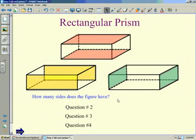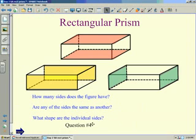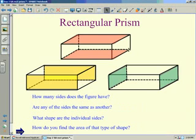Question 1, how many sides does this figure have? Question 2, are any of these sides the same as another? Question 3, what shape are the individual sides? Question 4, how do you find the area of that type of shape?